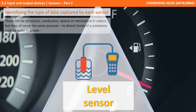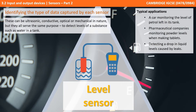Next up are level sensors. These can be ultrasonic, conductive, optical or mechanical in nature, but they all serve the same purpose: to detect the levels of a substance, for example the level of water in a water tank. Vehicles use this to monitor petrol levels in the tank. The pharmaceutical industry uses it for monitoring powder levels when making tablets, and it could be used to detect a drop in liquid levels due to leaks.